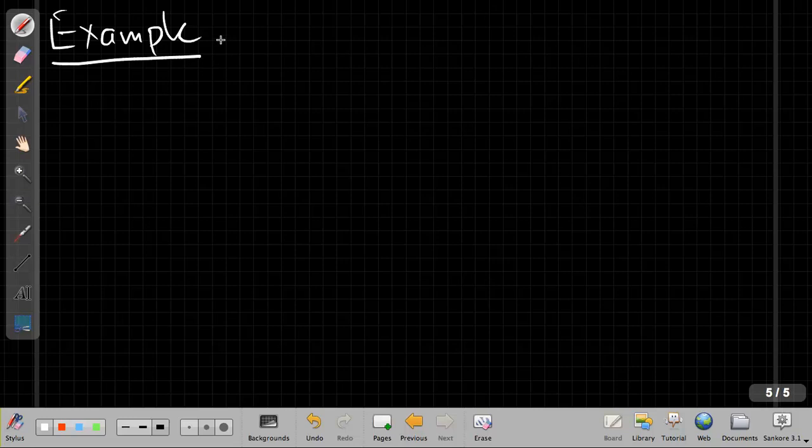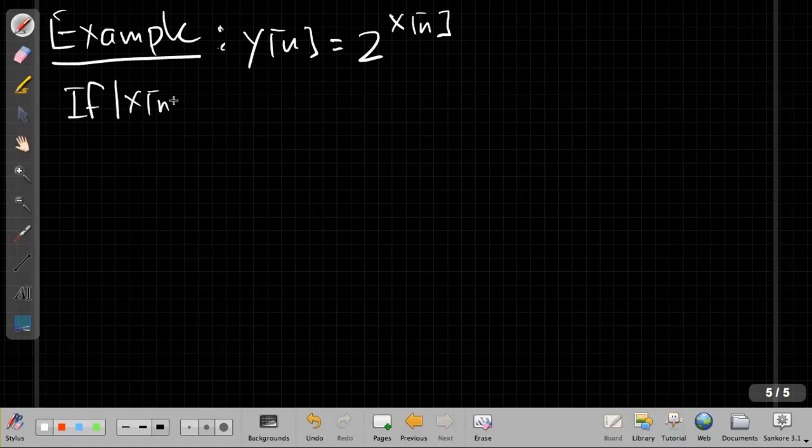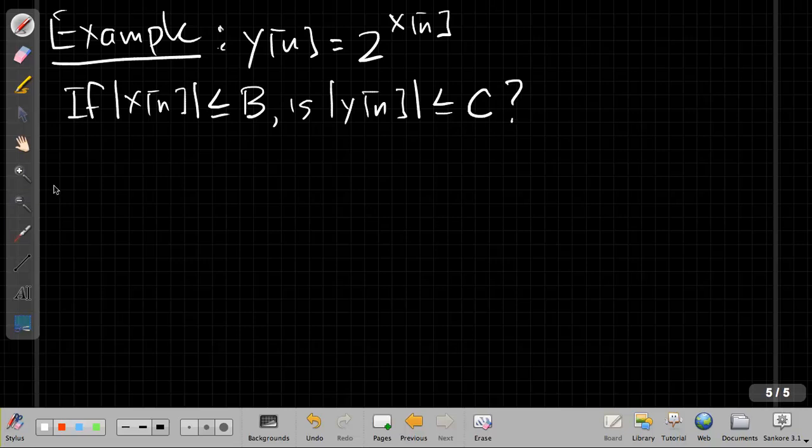So for this new system, let's say what if y[n] is 2 to the x[n]? It's the same approach. We're going to say, if, it's helpful to write out what we're trying to show. So we say if x[n] is bounded above by B, is y[n] less than or equal to C? That's how we check for stability.